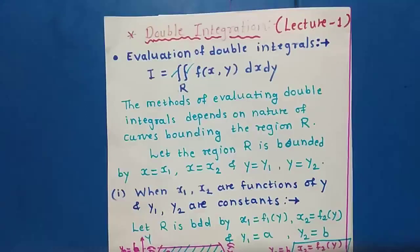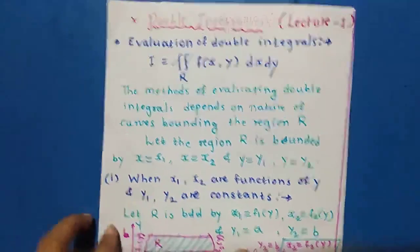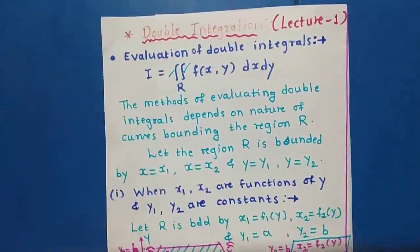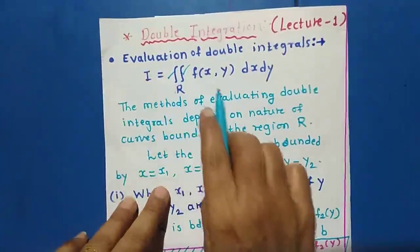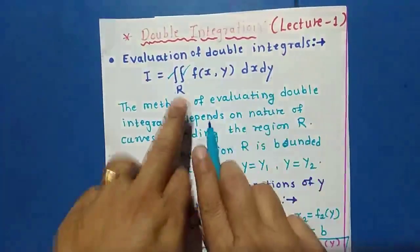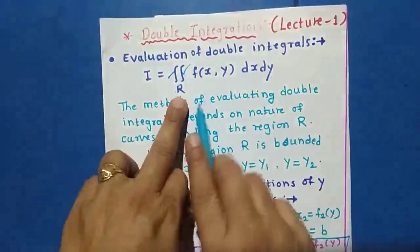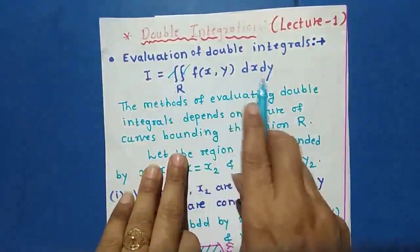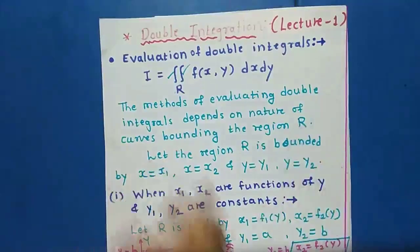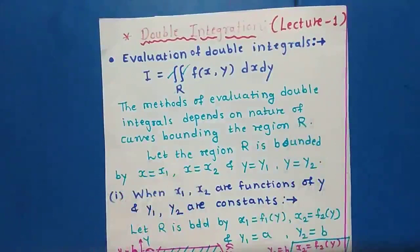Suppose the given integration is double integration over region R of f(x,y) dx dy. We are going to integrate this function f(x,y) with respect to x and with respect to y. Remember, the method of evaluating a double integral depends on the nature of the curves bounding the region R.